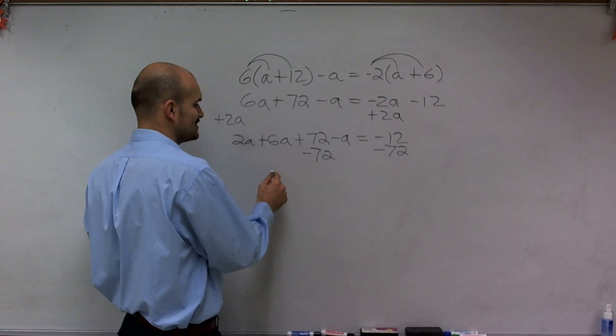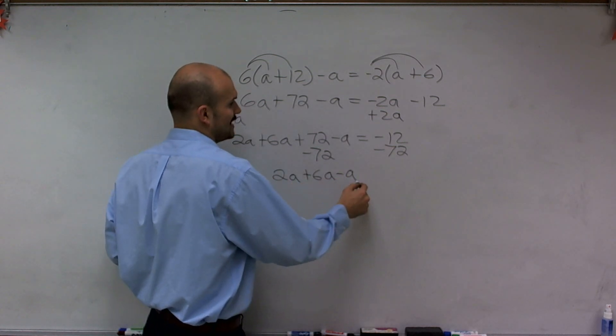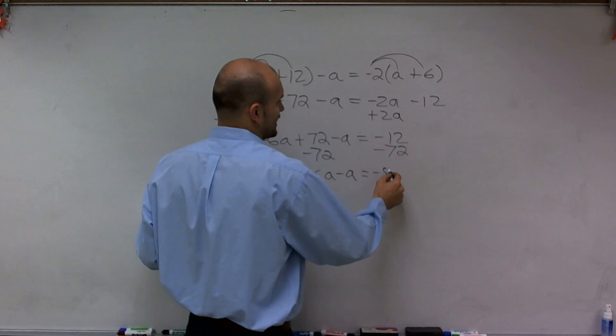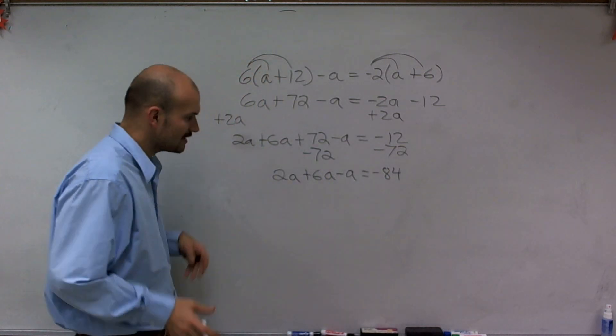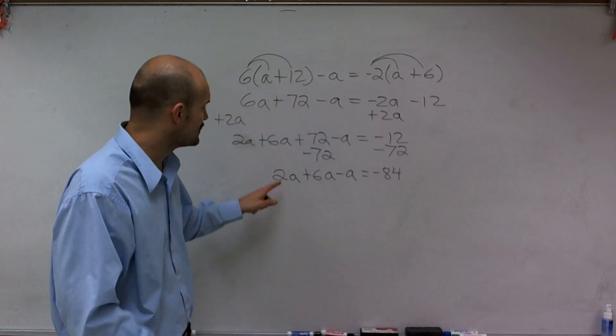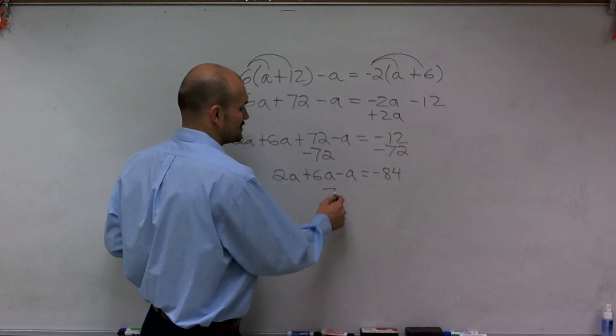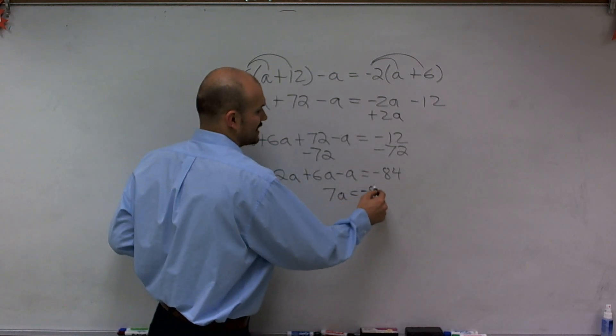So therefore, I'm going to no longer going to have this 72. Therefore, I have 2a plus 6a minus a equals a negative 84. Now I have all the variables on the same side. It's very easy for me to just combine them all together. 2a plus 6a is 8a minus a is going to be 7a equals a negative 84.